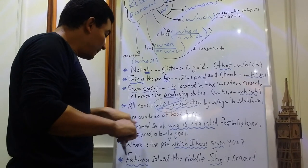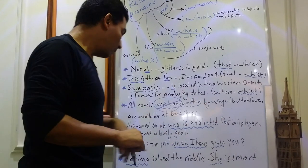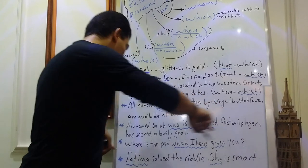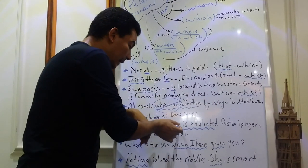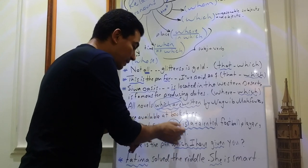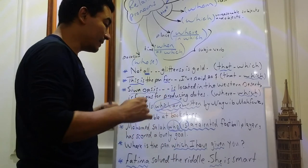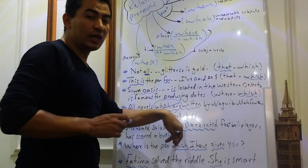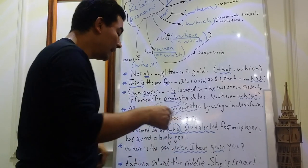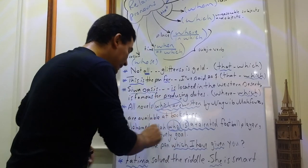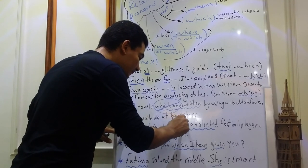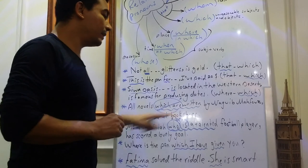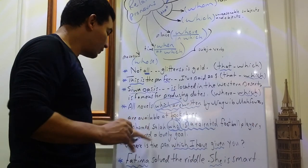The next sentence, Muhammad Salah, who is a talented football player, has scored a lovely goal. Of course here, a relative pronoun plus verb. In the beginning of the sentence, I can simply get the gerund formed from the main verb to be preceded by comma. So I can say Muhammad Salah, comma, being a talented player, comma, has scored a lovely goal.